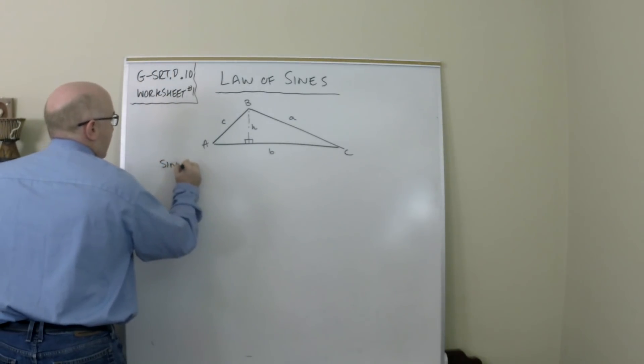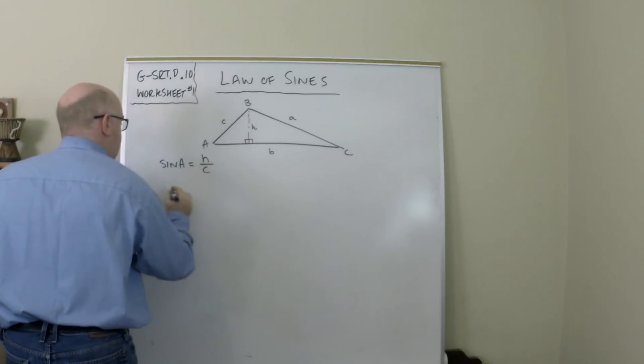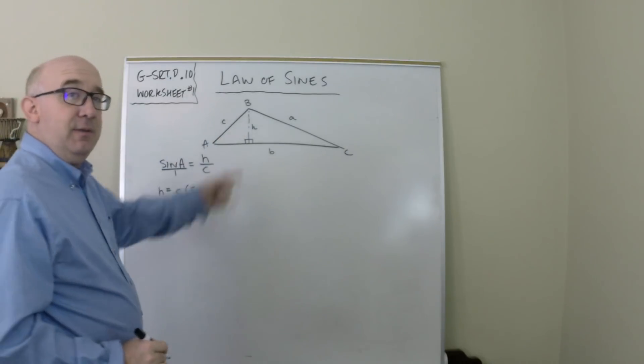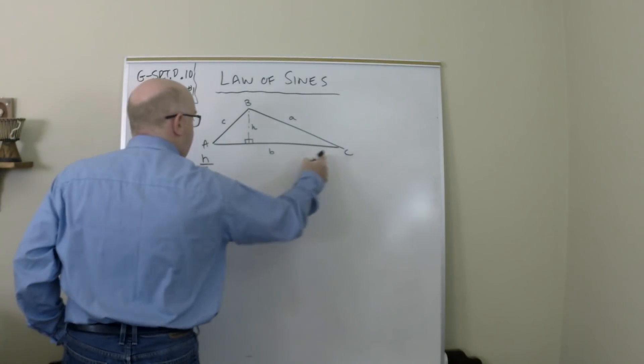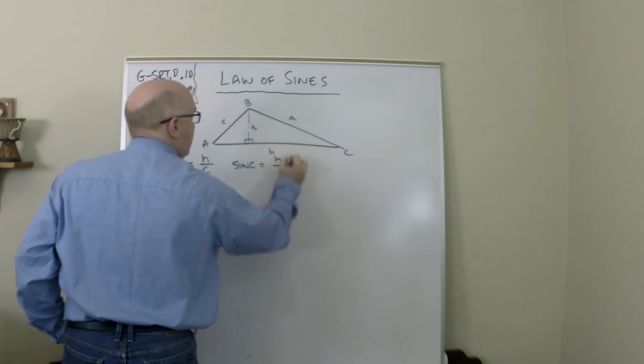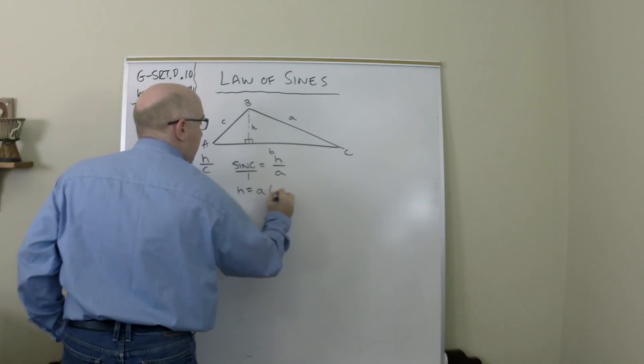So this would be the sine of A is H over C. If I cross multiply that, I get this. Now I'm going to do the same thing from the other side. So from this angle, the sine of C would be H over A. And if I cross multiply that, I get this.